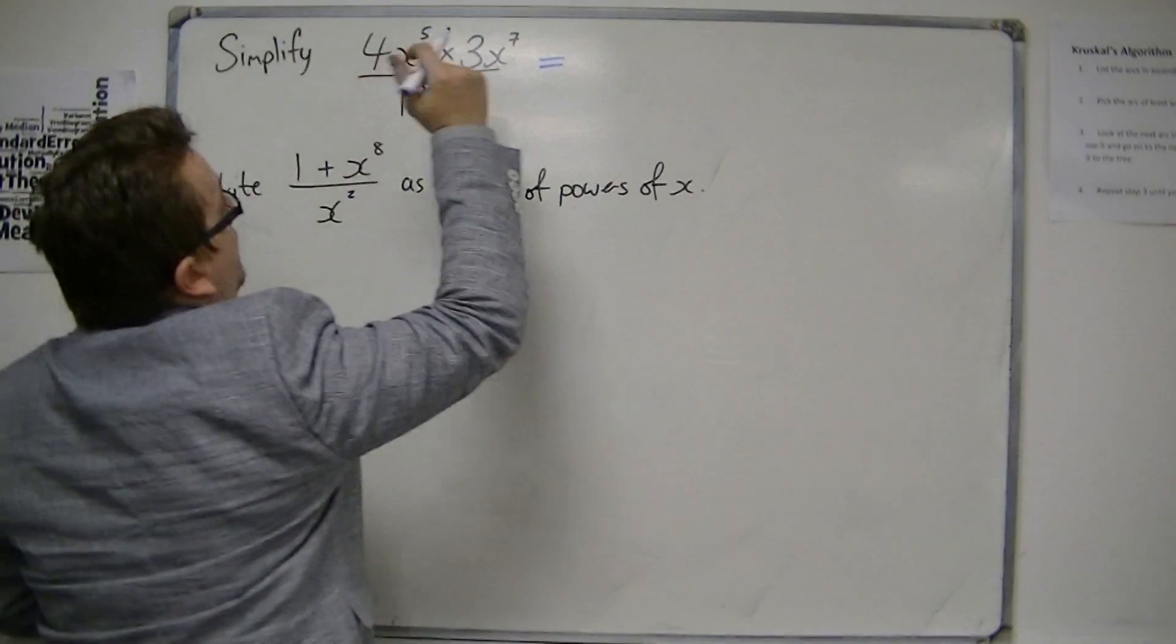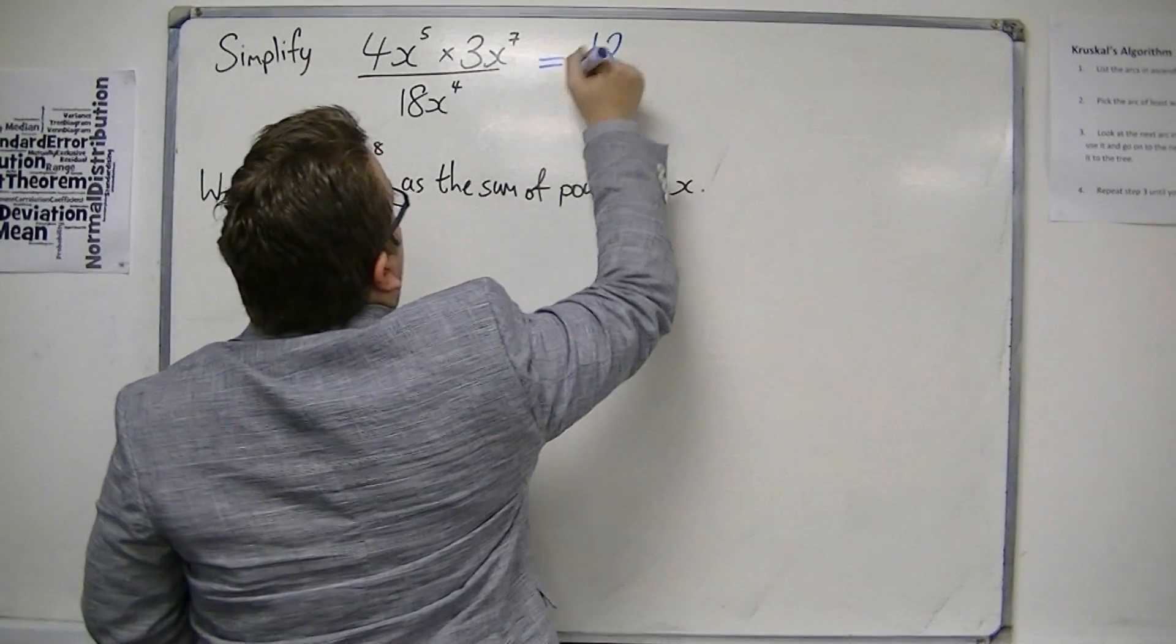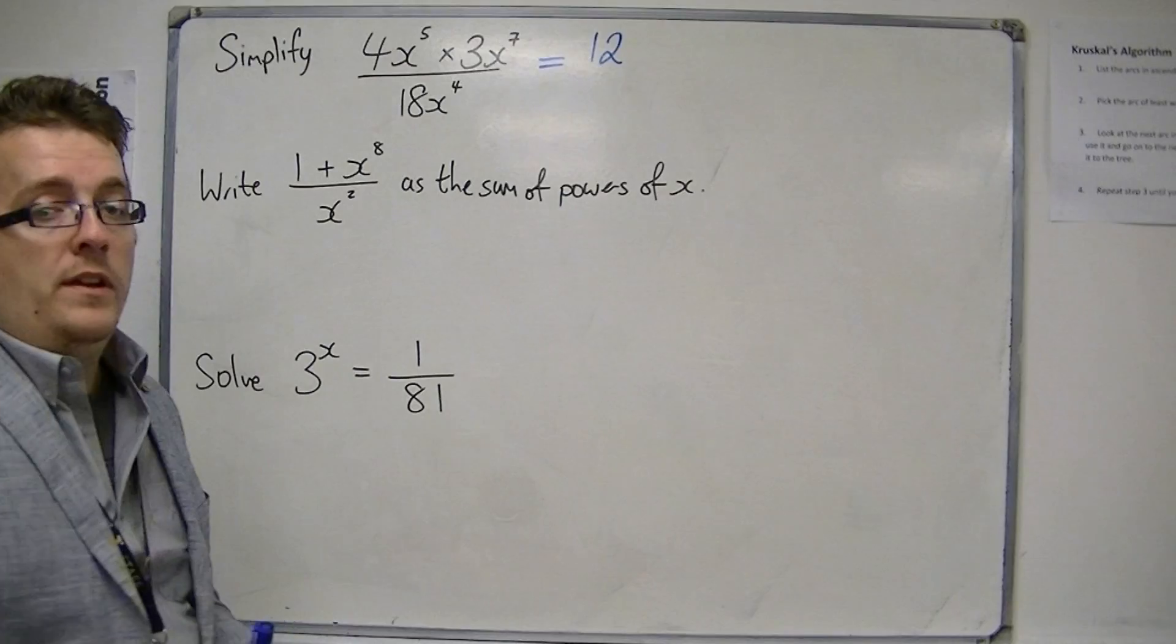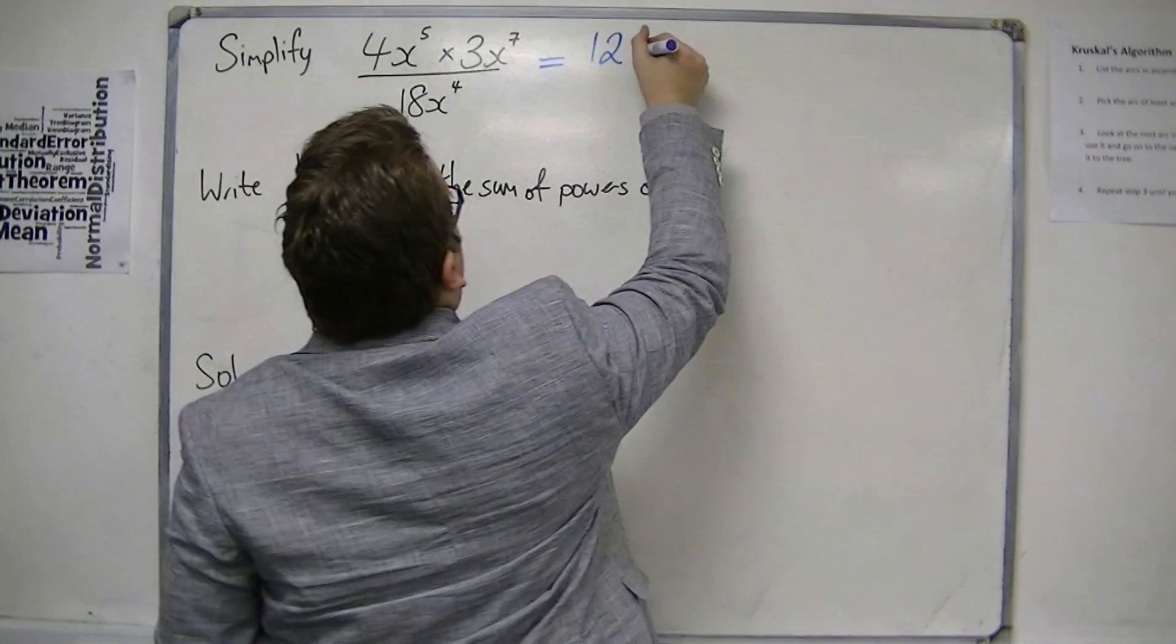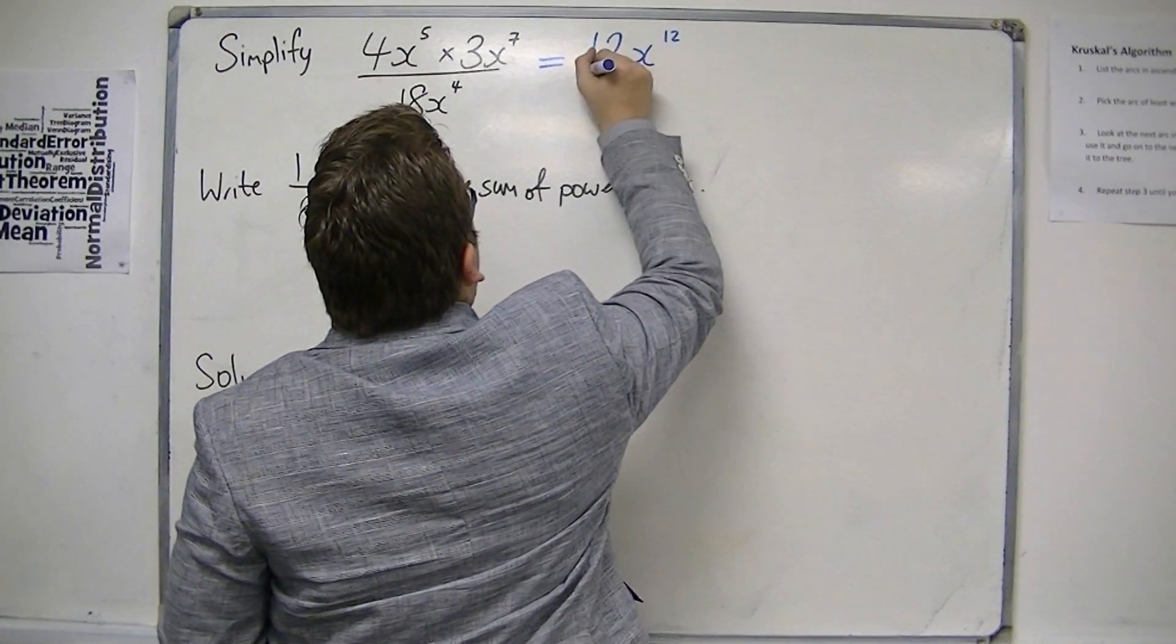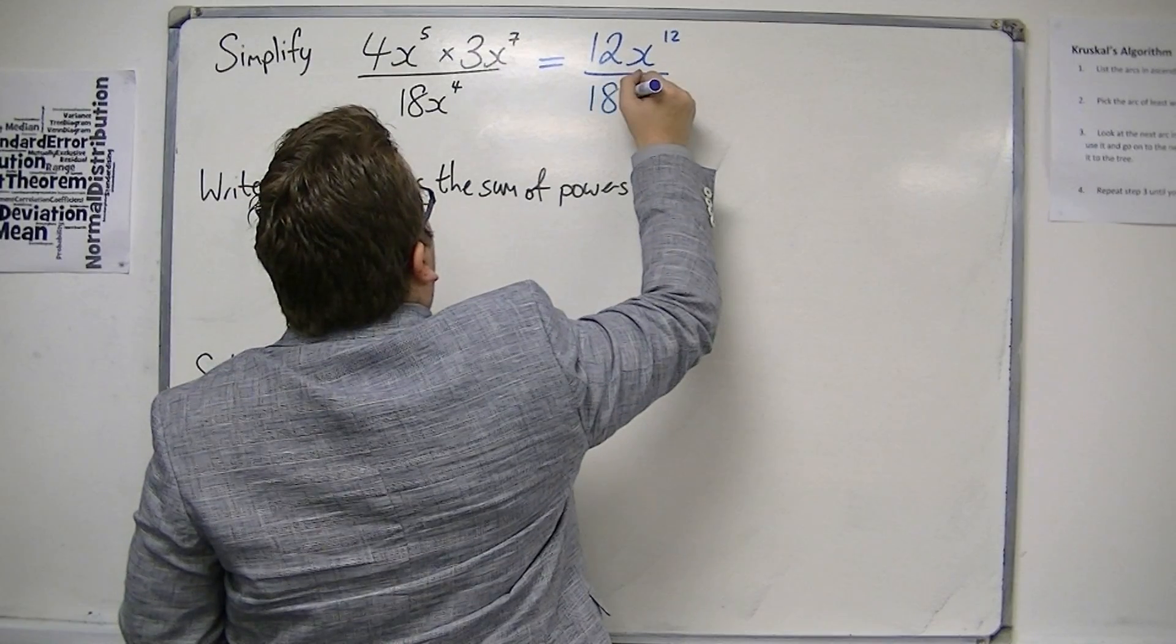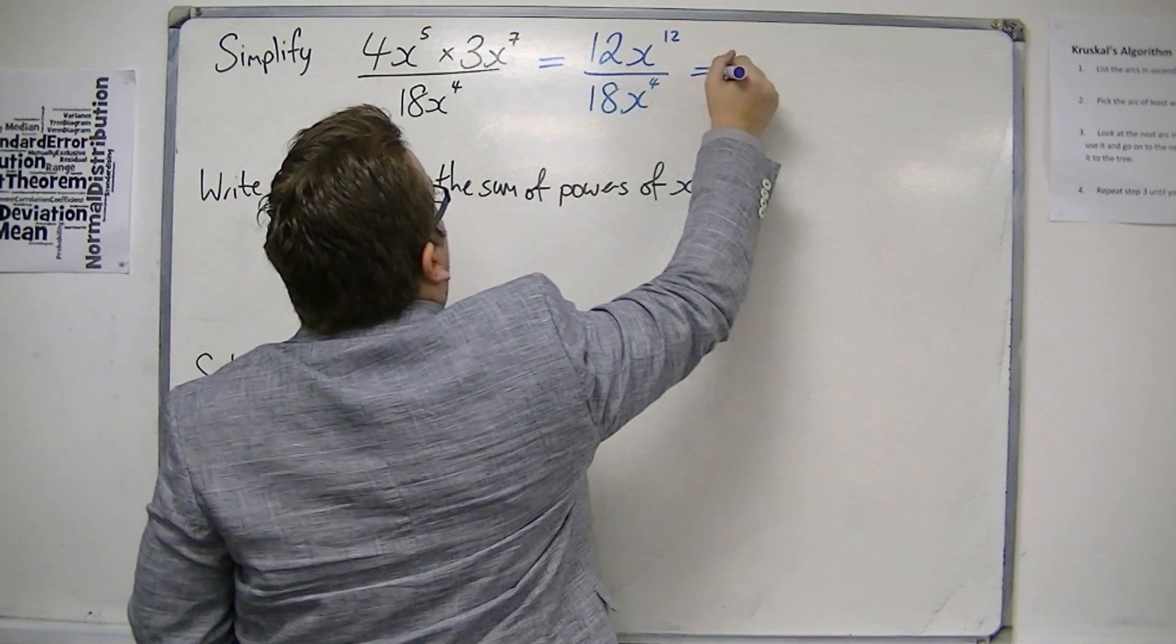We have 4 times 3 is 12, and then you've got x to the 5 times x to the 7 is x to the 12, because the indices would add together. And we've still got that 18x to the 4 in the denominator.